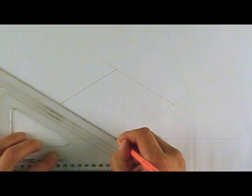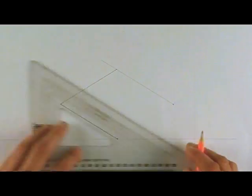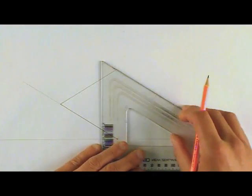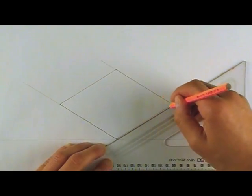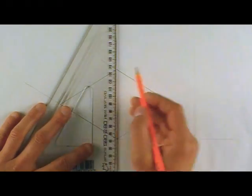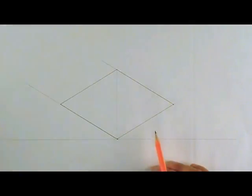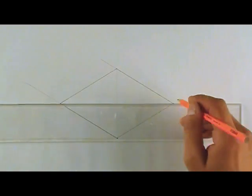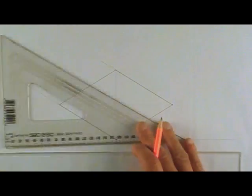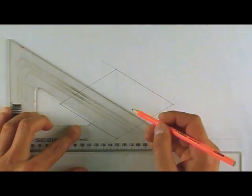I'm darkening the construction line so it's easier for you to see. Draw diagonals to get the exact center. Don't use your ruler. It'll give you a more accurate center if you do it this way.